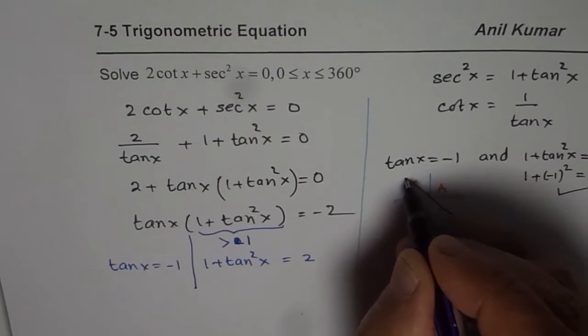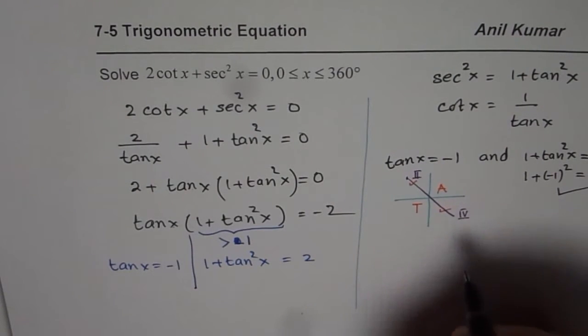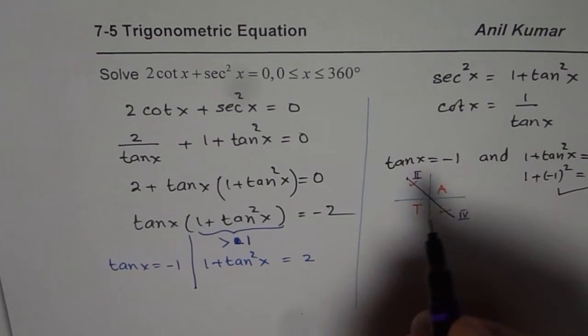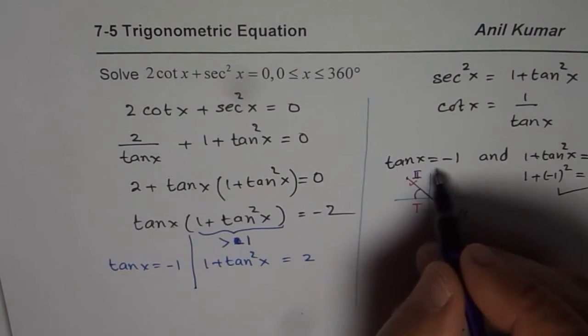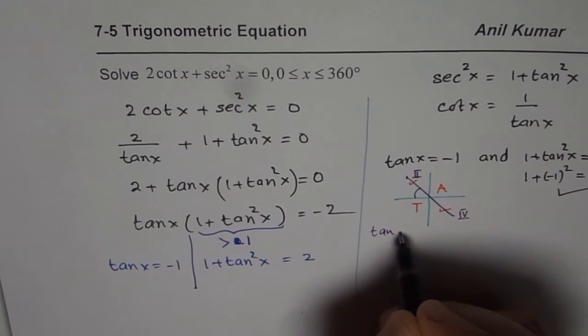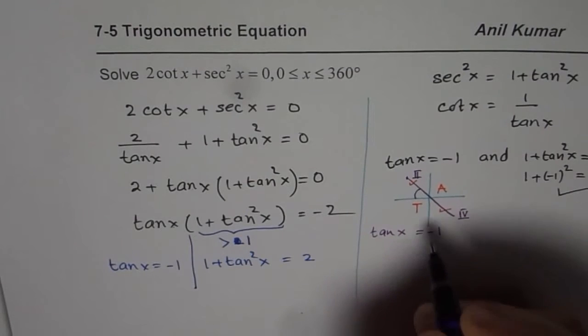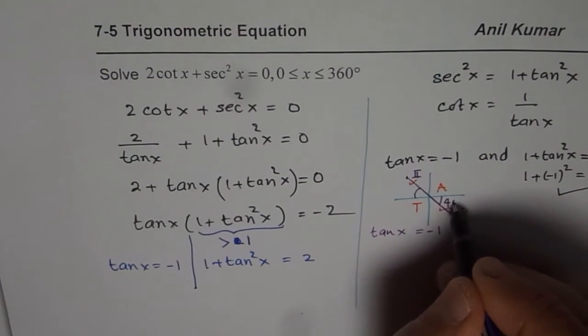sorry, one in quadrant 2 and the other one in quadrant 4. So tan x is minus 1 for acute angle of 45. So we have tan x equals to minus 1 means acute angle is 45. So these angles are 45 degrees.